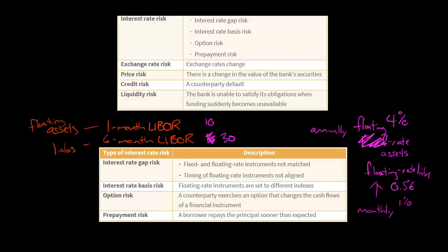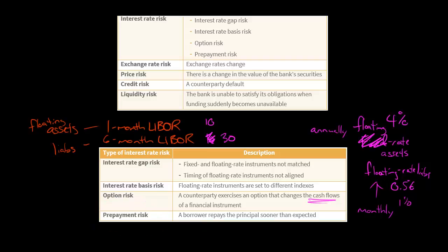Option risk is pretty simple: a counterparty decides to exercise an option. That option could be a number of things, but whatever it is, it ends up changing the cash flows of some financial instrument that the bank has. Prepayment risk is actually a type of option risk.